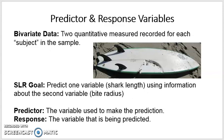The goal of regression is to make a prediction. You've got two quantitative variables. In this case, you've got the length of the shark and the bite radius. The bite radius is essentially the radius of this circle from the center out to the edge. So is there a relationship between the bite radius and the length of the shark? The predictor is what you're trying to use to make a prediction. What you'd like to do is predict from the bite radius the length of the shark. That's called the predictor variable. The response variable is the variable that's being predicted — in this case, we're trying to predict the length of the shark from its bite radius.